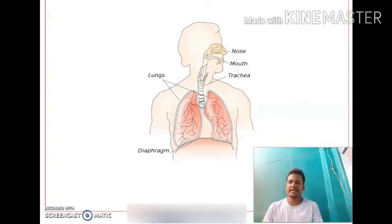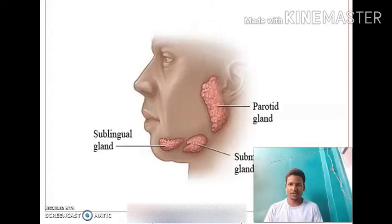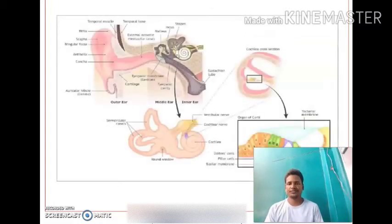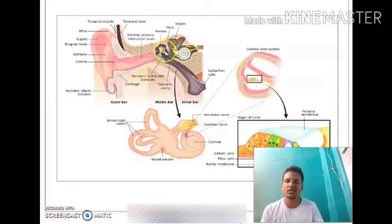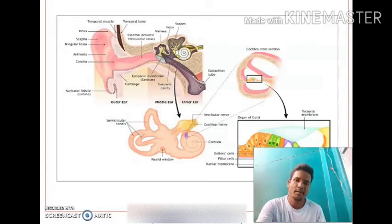Four types of salivary glands are present in mammals, but in humans only three types are present: the parotid gland, submandibular gland, and sublingual gland — the infraorbital gland is absent in humans. The outer ear, also called the external ear or pinna, is present. In the middle ear, three bones are present: malleus, incus, and stapes. The stapes is the smallest bone in the human body.